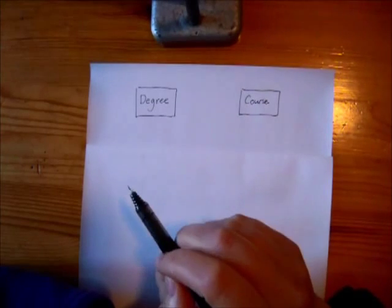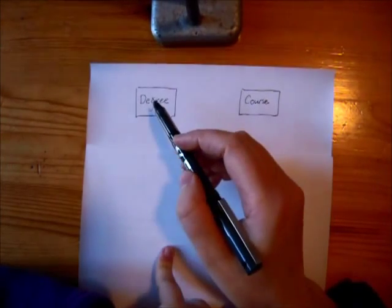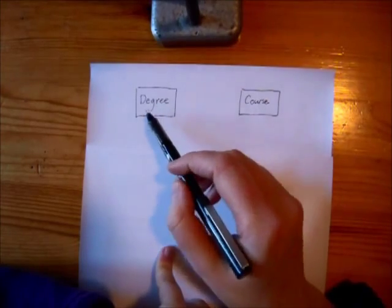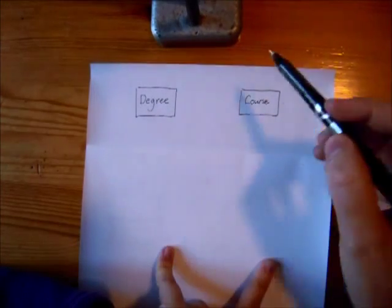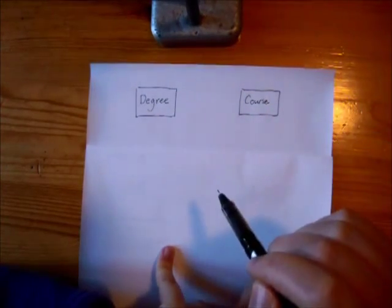Suppose we were building some kind of system for a university which was going to involve classes called degree, for example the software engineering degree, and courses, for example SEOC.